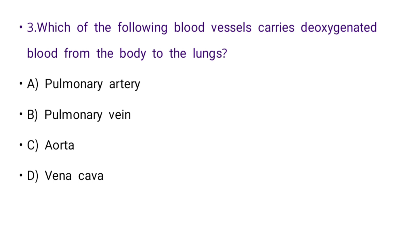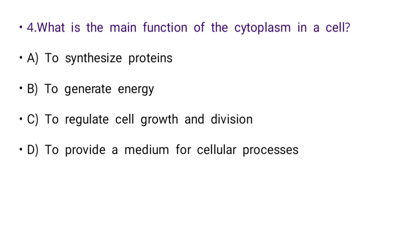Next: Which of the following blood vessels carries deoxygenated blood from the body to the lungs? Options: pulmonary artery, pulmonary vein, aorta, or vena cava. The right answer is A: pulmonary artery.